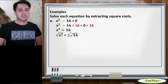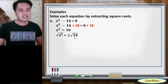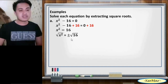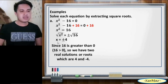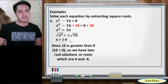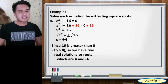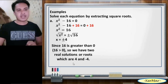Next, we extract the square root. So: square root of x squared equals positive or negative square root of 16. The square root of x squared is x, and the square root of 16 is 4. So x equals positive or negative 4. Since 16 is greater than 0, we have two real solutions or roots: 4 and negative 4.